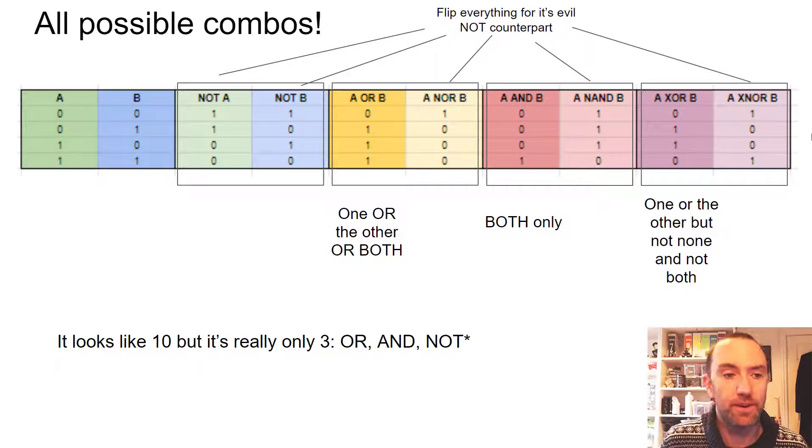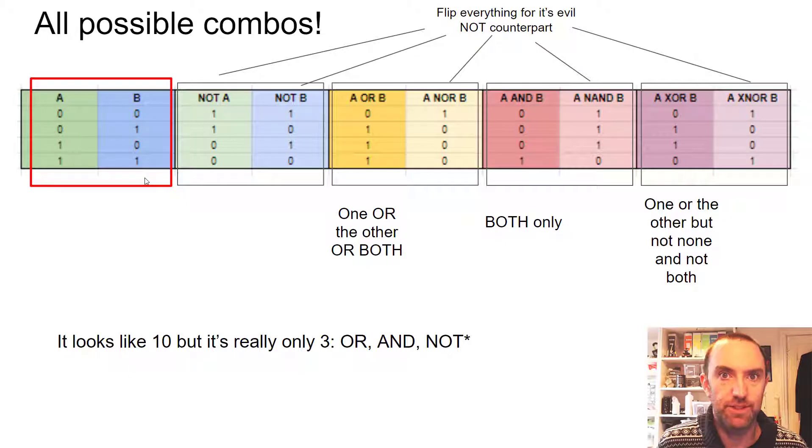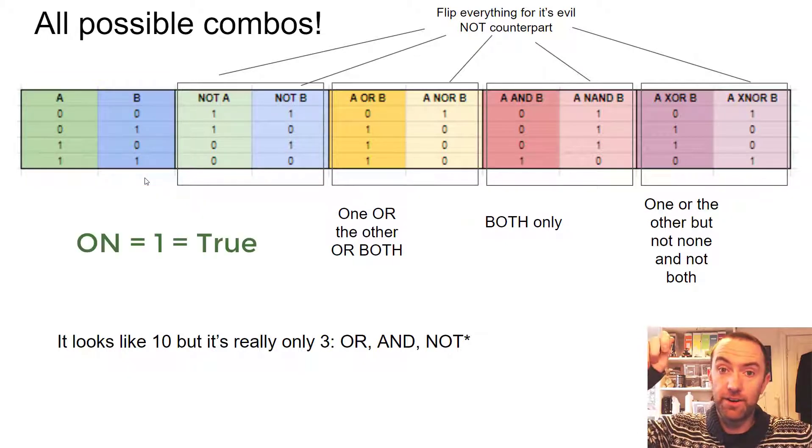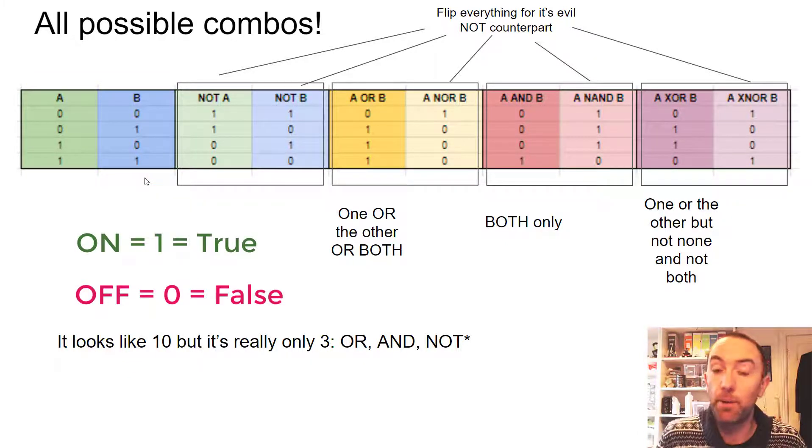You've got an A and B input. So just think of these as two light switches. They can have on one, off zero. So both light switches could be off, zero zero. The one on the right could be on, the one left could be on, or they could both be on. That's all of the possibilities.